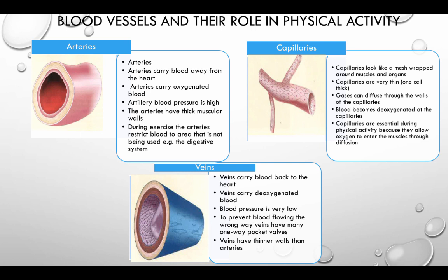Capillaries look like a mesh wrapped around the muscles and organs. Capillaries are very thin — they are one cell thick. Gases can diffuse through the walls of the capillaries. Blood becomes deoxygenated at the capillaries, and capillaries are essential during physical activity because they allow oxygen to enter the muscles through diffusion.